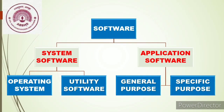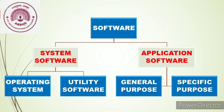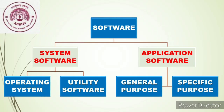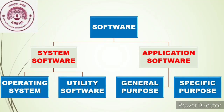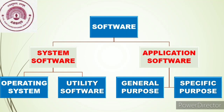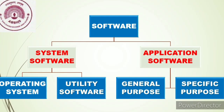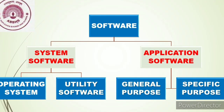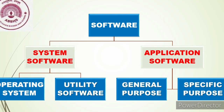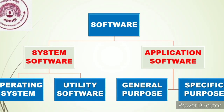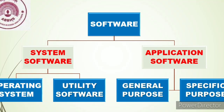Software is divided into two parts: system software and application software. System software is further divided into operating system and utility software, while application software is divided into general purpose software and specific purpose software.